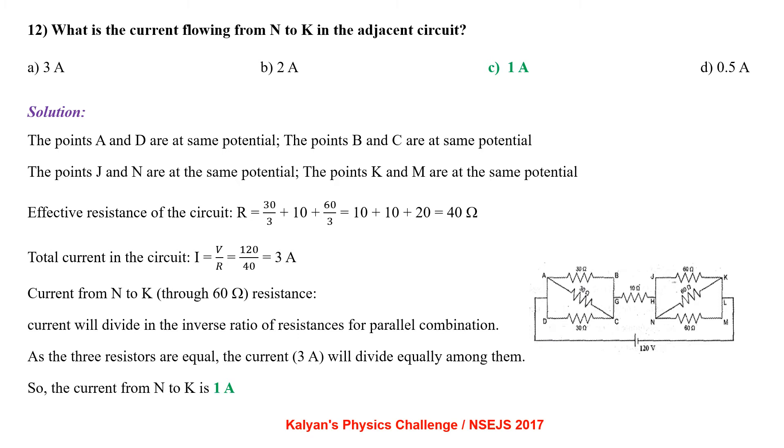So the effective resistance of the circuit would be R equal to 30 by 3 plus 10 plus 60 by 3 that comes out to be 40 ohm. Total current in the circuit I equal V by R that is 120 by 40 that comes out to be 3A. Current from N to K that is through 60 ohm resistance. Current will divide in the inverse ratio of resistors when they are connected in parallel. As the three resistors are equal the current will divide equally among them. So the current from N to K is 1A.